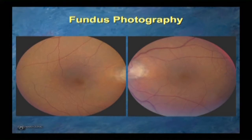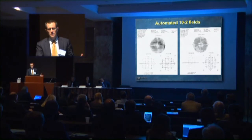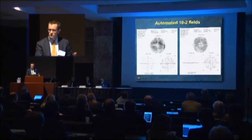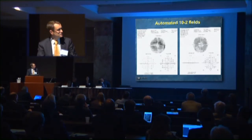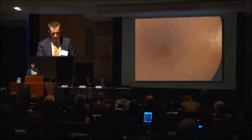Their color photos and exam were pretty unremarkable. But this is a red 10-2. We used to use red 10-2s and white 10-2s. There are some earlier studies showing the red might be a little more sensitive — the stimuli are closer to threshold — but as anyone who's read these knows, there's a lot of artifact. It's tough to know what you're looking at. In this case, you see a nice ring scotoma surrounding the center vision.